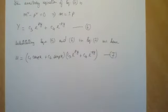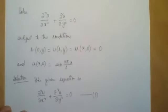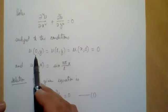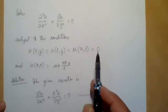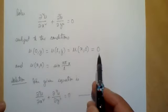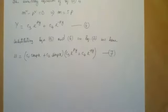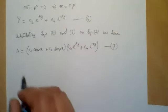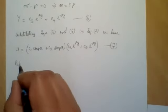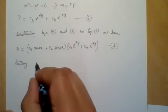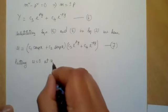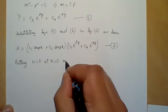Now let us use the boundary conditions. The boundary conditions are: u(0, y) = 0, meaning when x = 0, the value of u is 0. Let us first use this condition by putting u = 0 at x = 0 in equation 7.